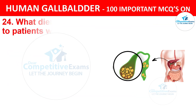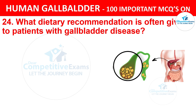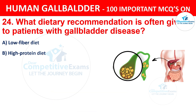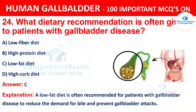Question 24: What dietary recommendation is often given to patients with gallbladder disease? Options are: A) Low fiber diet, B) High protein diet, C) Low fat diet, D) High carb diet. The correct answer is C, low fat diet. A low fat diet is often recommended for patients with gallbladder disease to reduce the demand for bile and prevent gallbladder attacks.